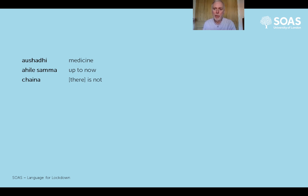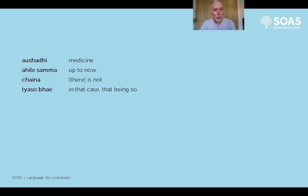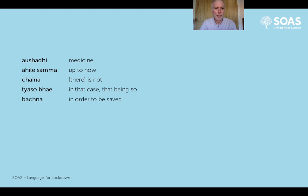'China' is the negative of 'cha'. So we say 'cha' when something is, or exists, or is in a particular place - and 'china' is the negative: 'is not', 'there isn't any'. 'Desu bhai' - the grammar is a little advanced at this stage, but just use it as a phrase meaning 'if that's the case', 'if that's so', 'that being so'. 'Bachna', from 'bachnu', means 'to be saved', 'to be rescued' - so 'in order to be saved'.